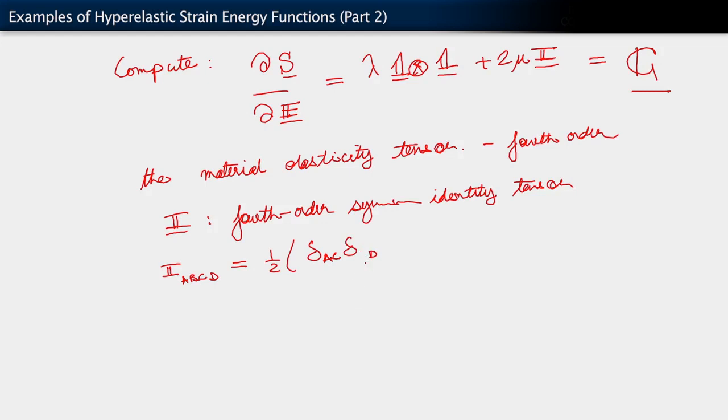delta b d plus delta a d delta b c. And there you see why it is a fourth order tensor, because it has four indices.